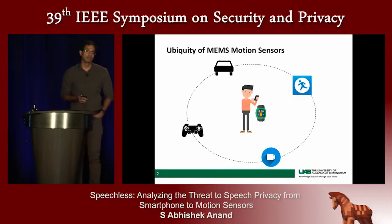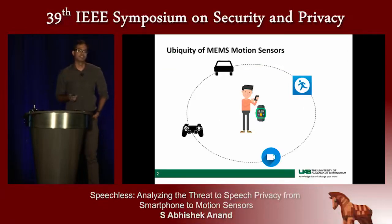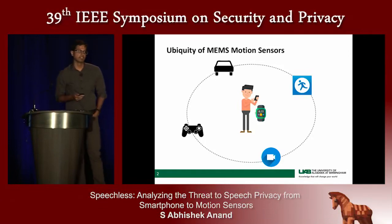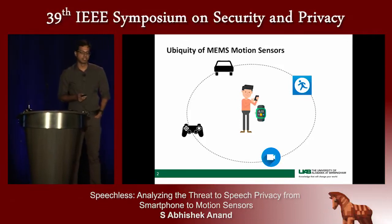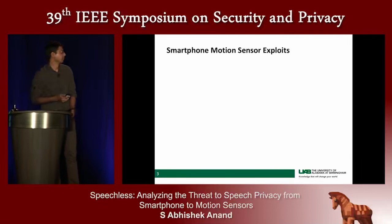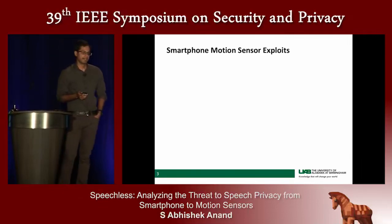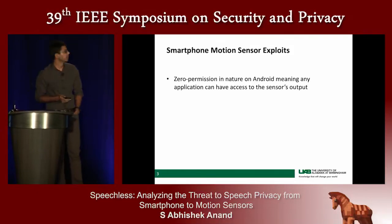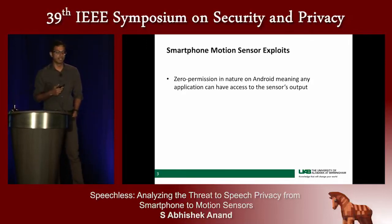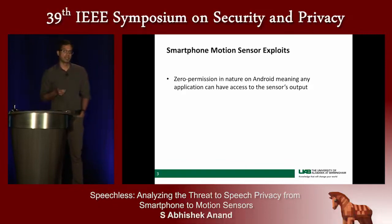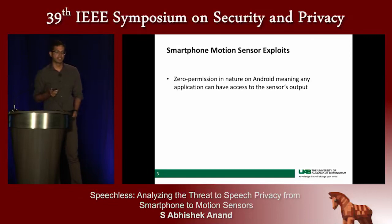Our smartphones house multiple sensors, and these motion sensors are used in many applications such as driving applications, gaming, image stabilization in photography, and various health applications. Because they are so widespread, there have been multiple exploits researched that utilize the zero-permission nature of these motion sensors to perform attacks. Zero permission means that any application or web content can access the output of these motion sensors without asking for any explicit user permission.